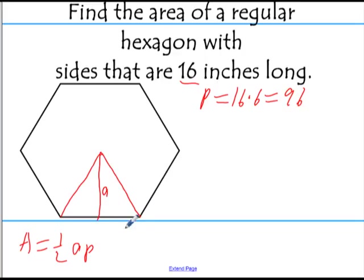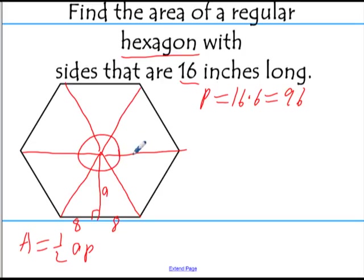I know this whole side is 16, which means each of these is 8 because it bisects it. I know that's a right triangle, and because this is a hexagon, I know if I were to draw all of those angles, I know that all of that is 360. There are 6 of them, so 360 divided by 6 means each of those vertex angles in those triangles is 60 degrees.